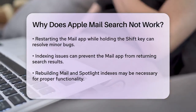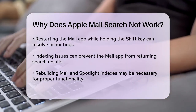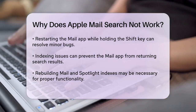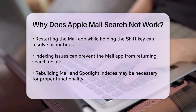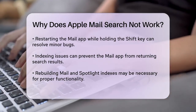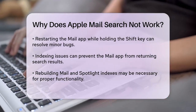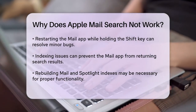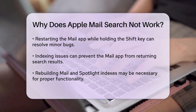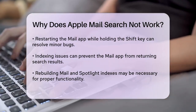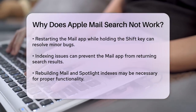Indexing issues. The Mail app relies on indexing to search for emails. If the indexing process is stuck or not working correctly, you won't get any search results. You might need to remove and rebuild the Mail and Spotlight indexes to fix this.